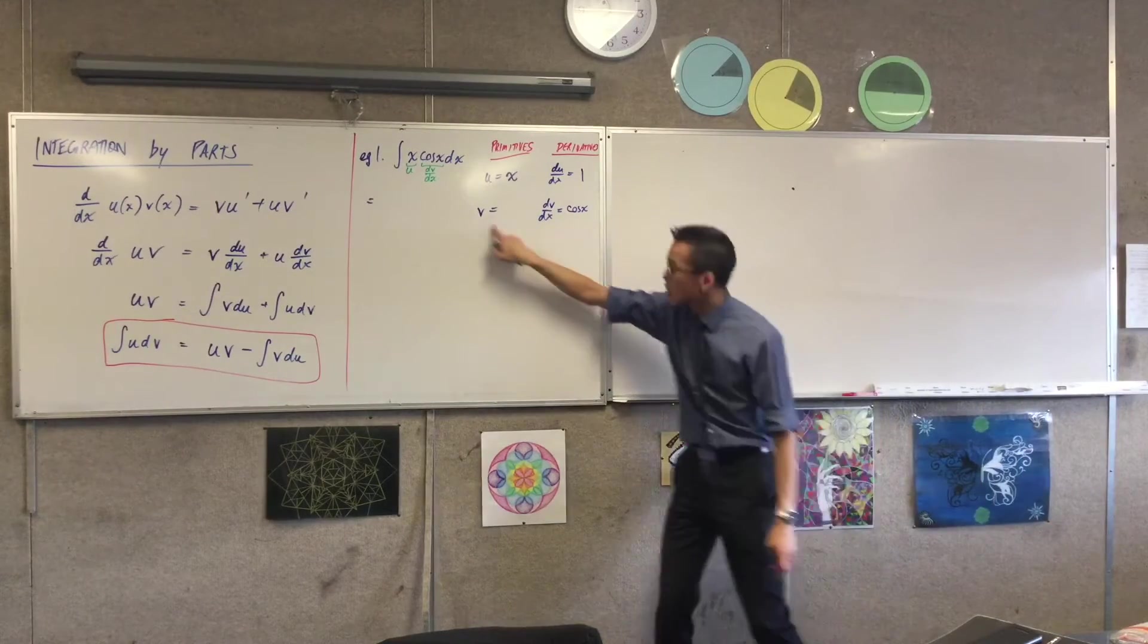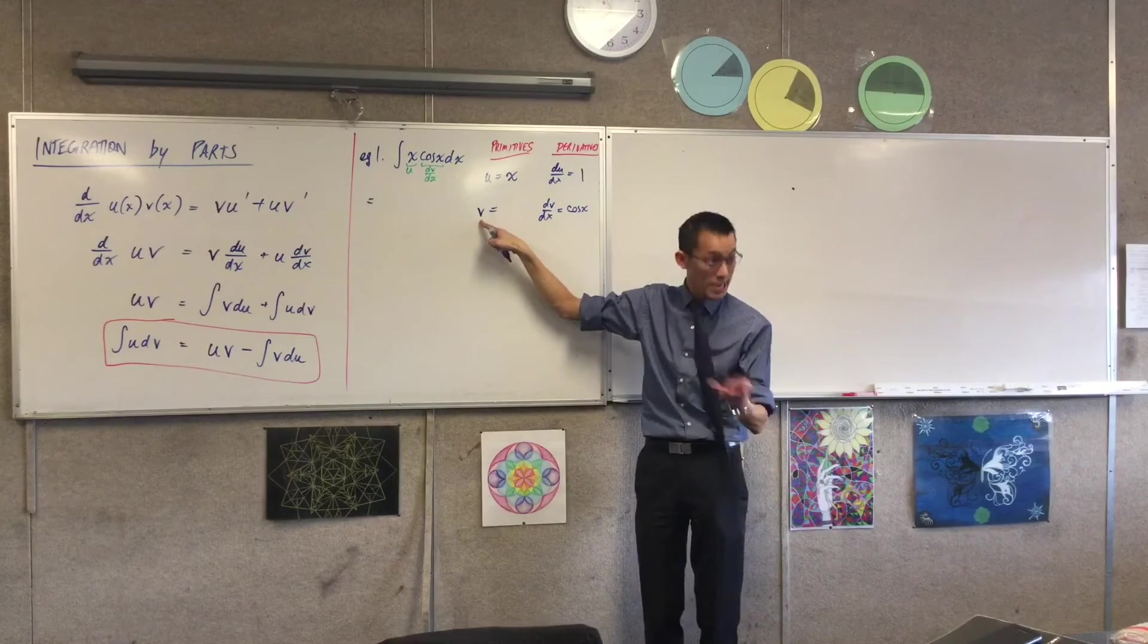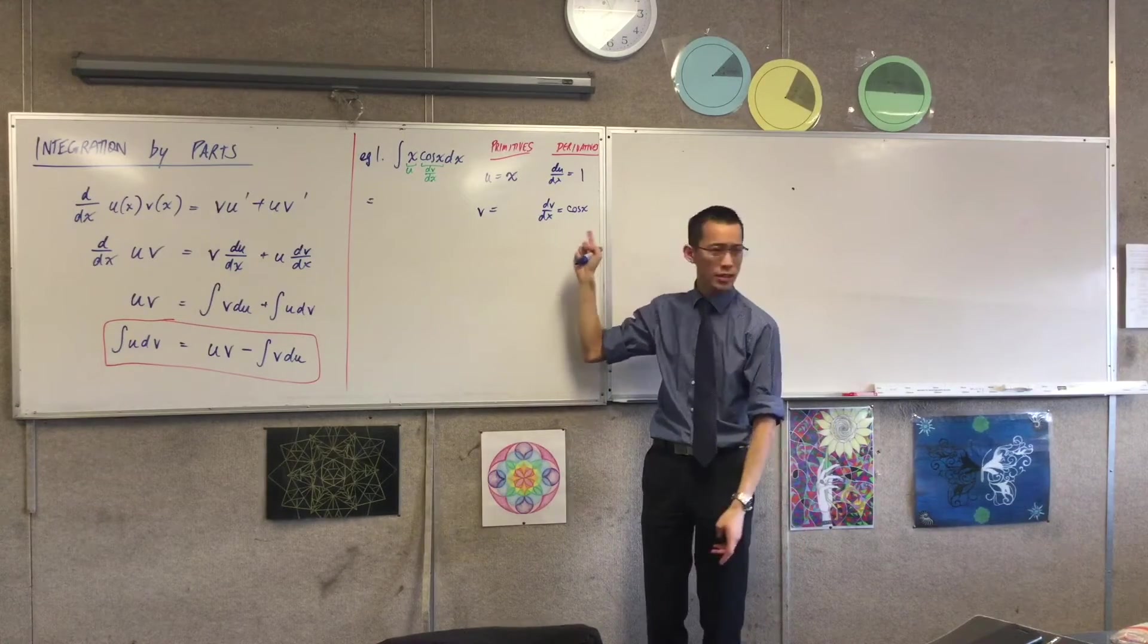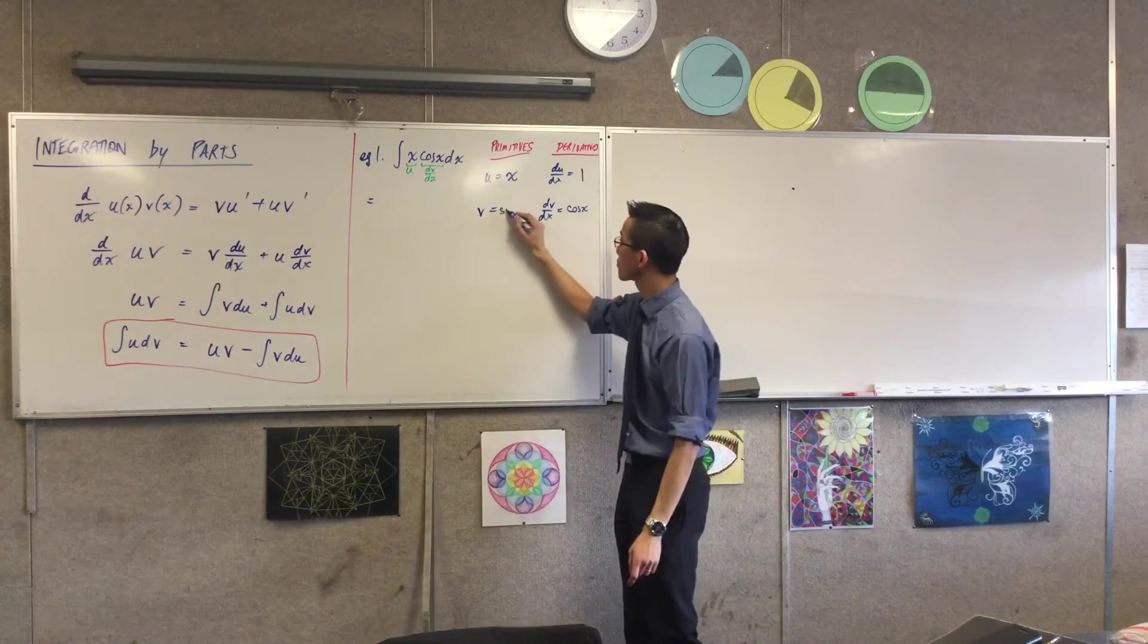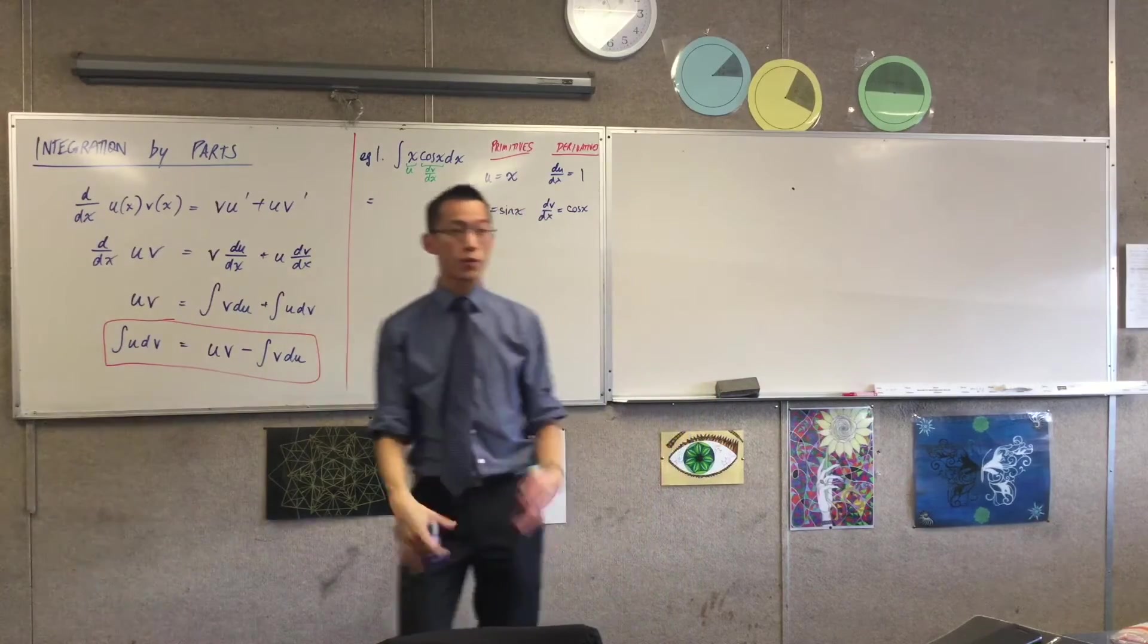To get from dv/dx to v, I have to integrate. So what's the primitive function of cos x? Just sin x. So I've got all my parts now.